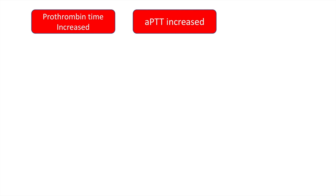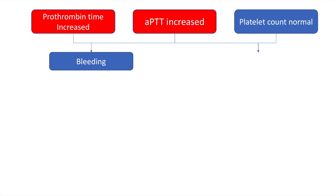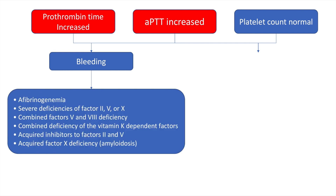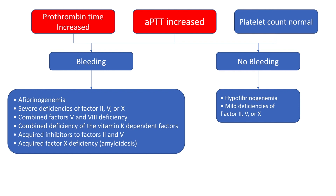The third possibility is where both prothrombin time and activated partial thromboplastin time are increased with a normal platelet count. If the patient is bleeding, the most important causes are deficiency of factors 2, 5, and 10, combined factor deficiency of 5 and 8, and factor 10 deficiency in amyloidosis. Please keep in mind that acquired factor 10 deficiency in amyloidosis causes raccoon eyes. If the patient is not bleeding, consider hypofibrinogenemia or mild deficiency of factors 2, 5, or 10.